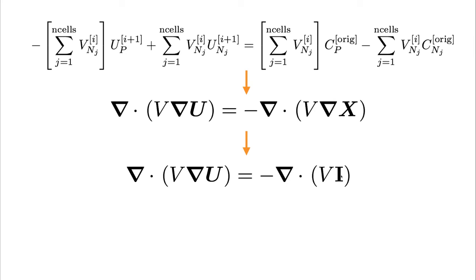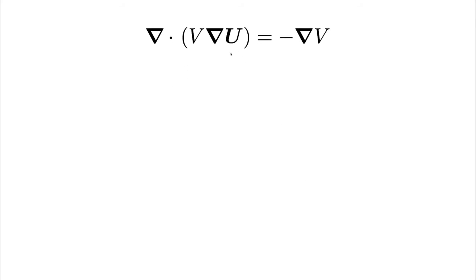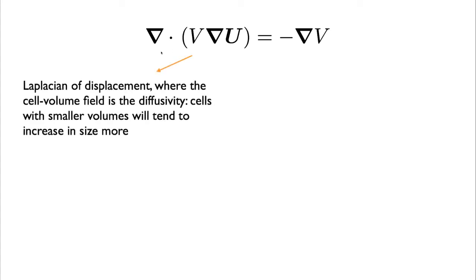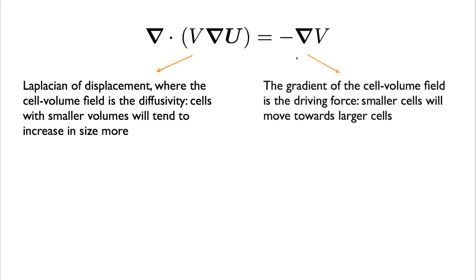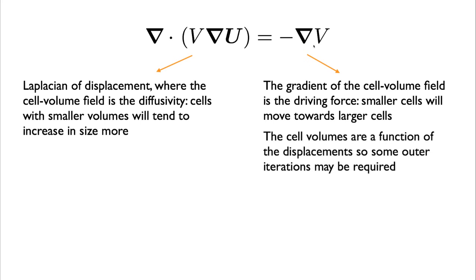So then our final PDE that we'll implement in OpenFOAM will be Laplacian of unknown displacement, where the diffusivity are the cell volumes, which is equal to minus the gradient of the cell volumes. On the left is Laplacian of displacements, where the cell volume field is diffusivity. This means that cells with smaller volumes will tend to increase in size or move more, so they're more flexible. On the right hand side, the gradient of the cell volume field is the driving force. That means that smaller cells will tend to move towards larger cells. So larger cells will tend to get smaller and smaller cells will tend to get larger. Just to point out as well, the cell volumes will change as a function of the displacement field. This means this is actually a nonlinear PDE, because V here is actually a function of U.